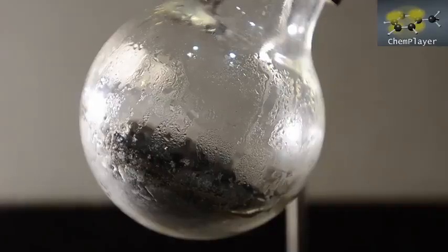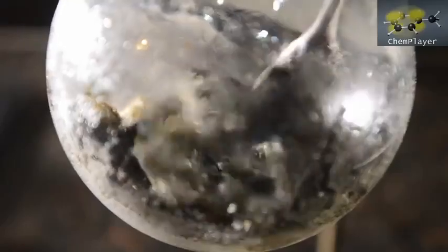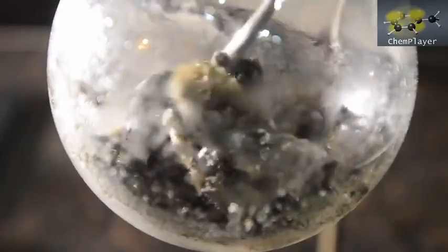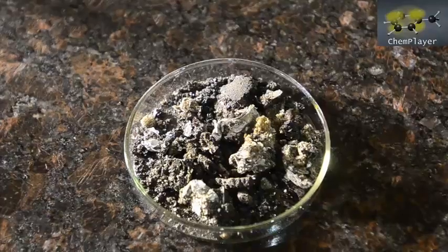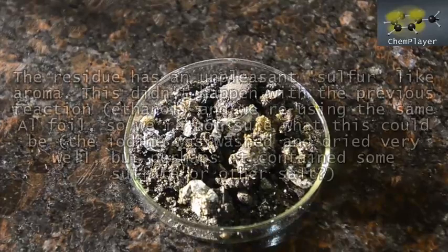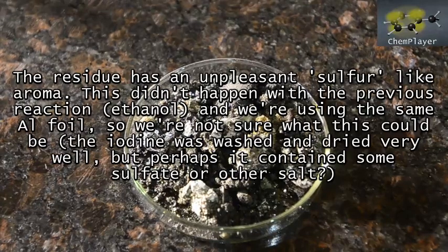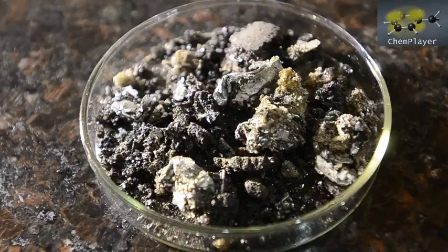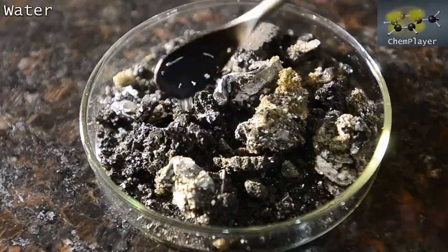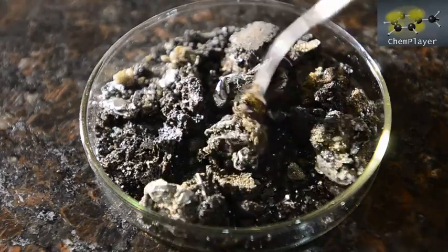Here's what's left in the flask. A fairly dry solid with some bits of recognizable aluminum foil in there, but mostly a strange amorphous dark solid. It's also got a slightly unpleasant sulfur-like aroma, possibly due to some sort of contamination from the aluminum foil. Although it's the same foil we used for the previous ethyl iodide reaction, it doesn't react at all obviously with water. So there's nothing exotic in here and no aluminum iodide obviously present.